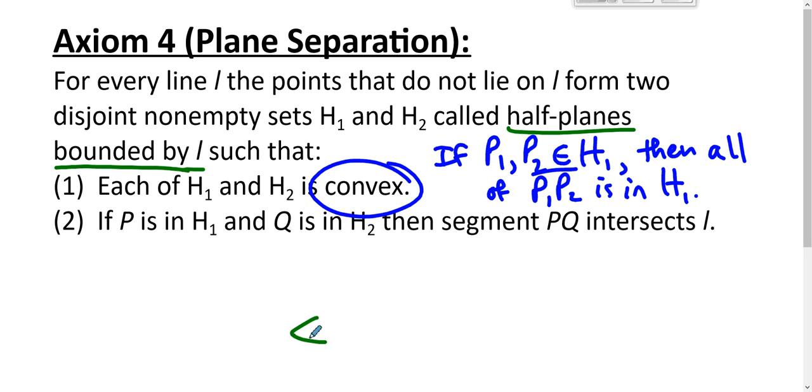So, we imagine that there is some line L, and that line L is the boundary for two disjoint non-empty sets H1 and H2. These are disjoint non-empty sets called half planes. This set is convex. This set is convex. And if P is up here and Q is down there, no matter where Q is down here, no matter where P is up here, the segment between them must intersect line L.